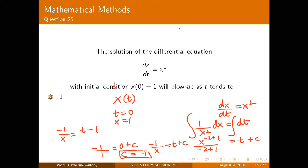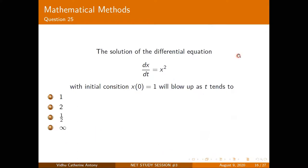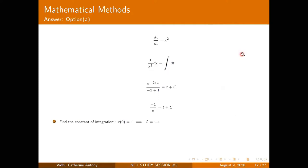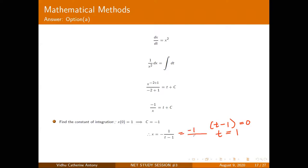With this solution x = 1/(1−t), x blows up when the denominator equals zero: 1 − t = 0, giving t = 1. So x tends to infinity as t → 1. The answer is t = 1.